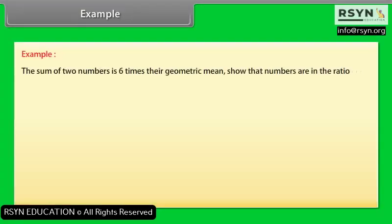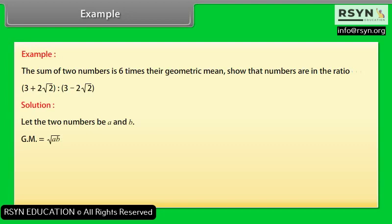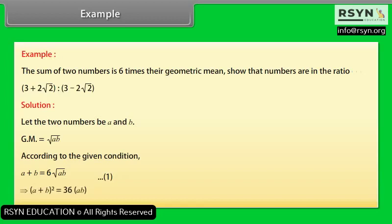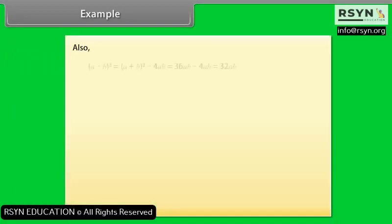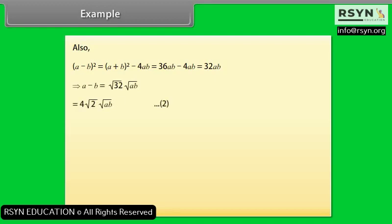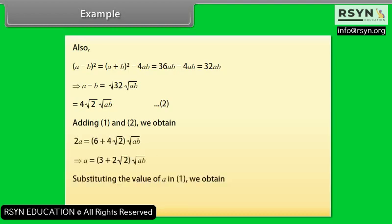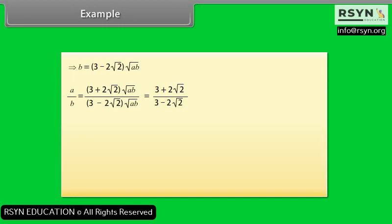Example: The sum of two numbers is 6 times their geometric mean. Show that the numbers are in a certain ratio. Solution: Let the two numbers be A and B. Given A + B = 6√(AB) — equation 1. Squaring: (A+B)² = 36AB. Also, (A−B)² = (A+B)² − 4AB, giving A − B = 4√2 × √(AB) — equation 2. Adding equations 1 and 2, and substituting back, we obtain A/B = (3 + 2√2) / (3 − 2√2).